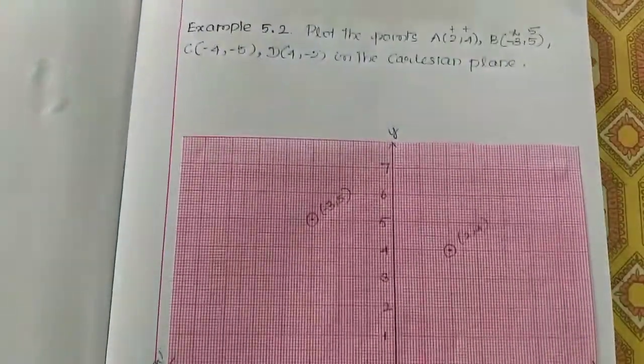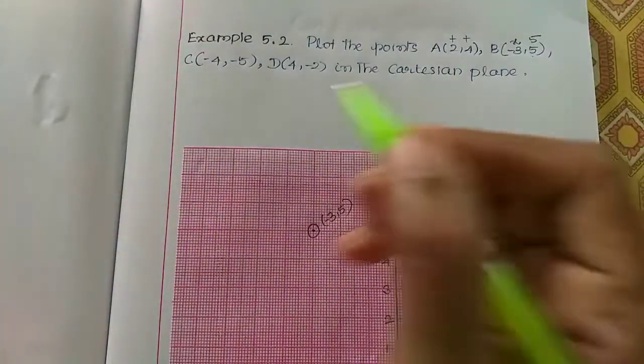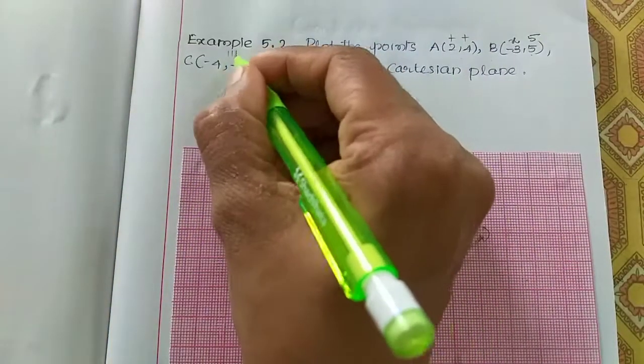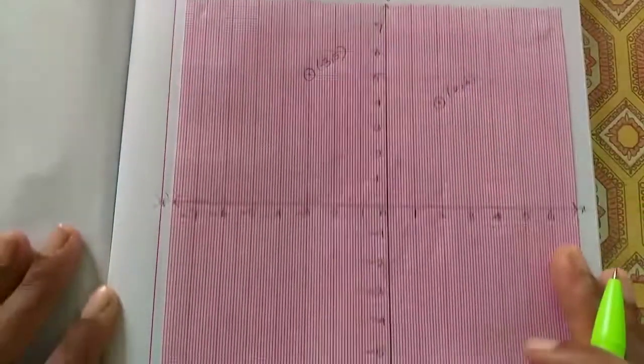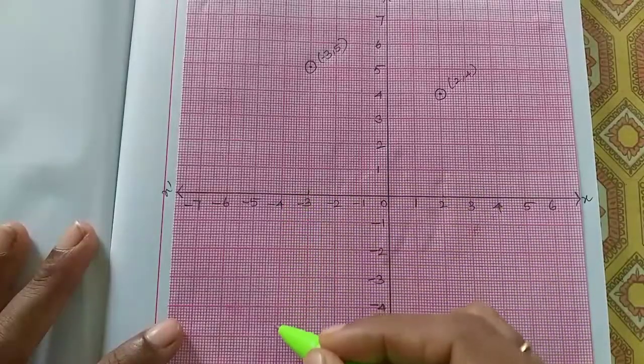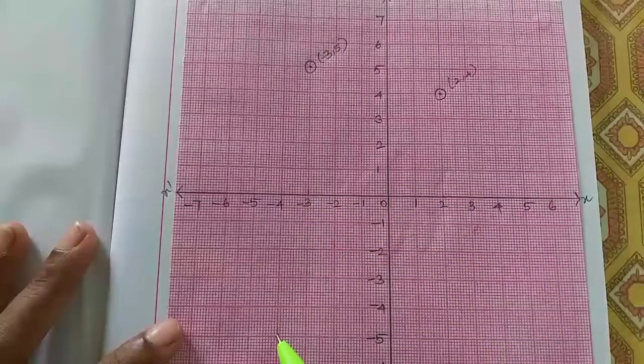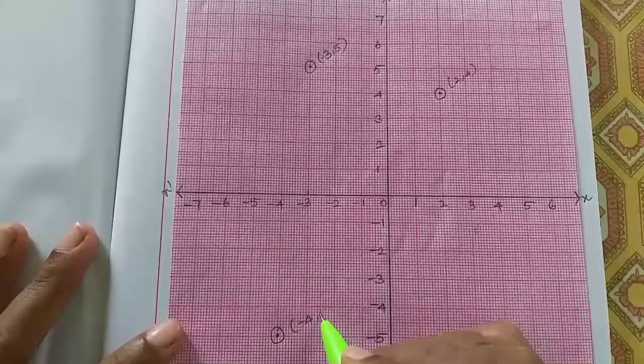Next, C is minus 4, minus 5. Both are minus numbers, so it's in the third quadrant. X-axis is 4, y-axis is 5. So this is minus 4, minus 5.